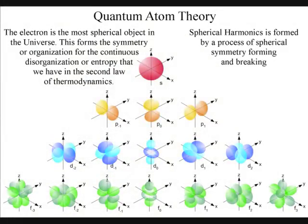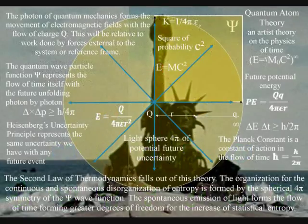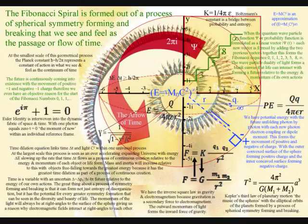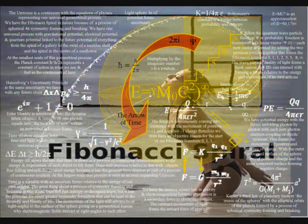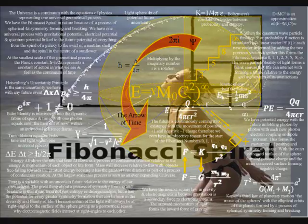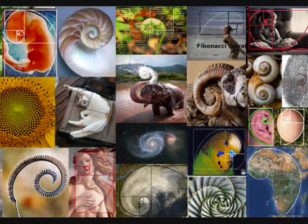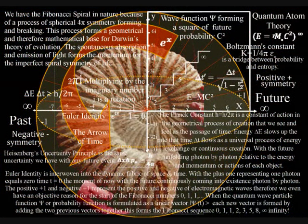At the most fundamental level, this is a process of spherical symmetry forming and breaking relative to the atoms of the periodic table. The reason why there is something rather than nothing is that a process of spherical symmetry forming and breaking will naturally form entropy or disorganization, with a built-in potential for ever greater symmetry formation. In such a process, the future is not based totally on uncertainty; it is based on broken symmetry relative to the structure of the atoms. When the spherical symmetry is broken, it has the potential to form the most beautiful of geometrical shapes, with the Fibonacci spiral being visible almost everywhere in nature. These spirals are formed out of broken symmetry, which is why they are never perfect.